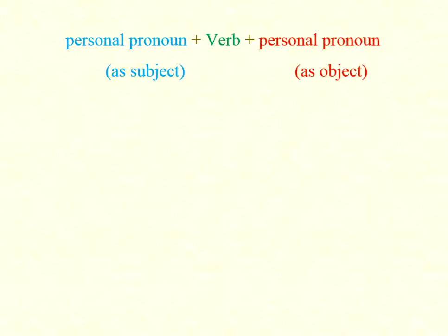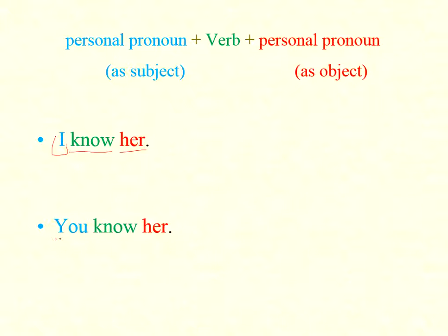Here 'subject' refers to nominative and 'object' refers to accusative. How we make a sentence in German language: personal pronoun as a subject (nominative) plus verb plus personal pronoun as an object (accusative). For example: 'I know her' — 'I' is nominative, 'know' is the verb, 'her' is accusative. 'You know her' — nominative, verb, accusative object.